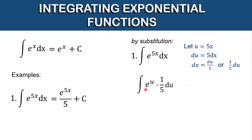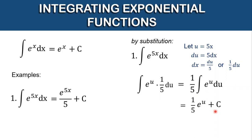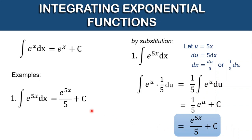We pull out one-fifth from the integration symbol. We have one-fifth times the antiderivative of e raised to u. The antiderivative of e raised to u is itself, so we have one-fifth times e raised to u plus c. Then we put back the value of u, which is 5x, giving us e raised to 5x over 5 plus c. This is the final answer, and it matches the direct method.